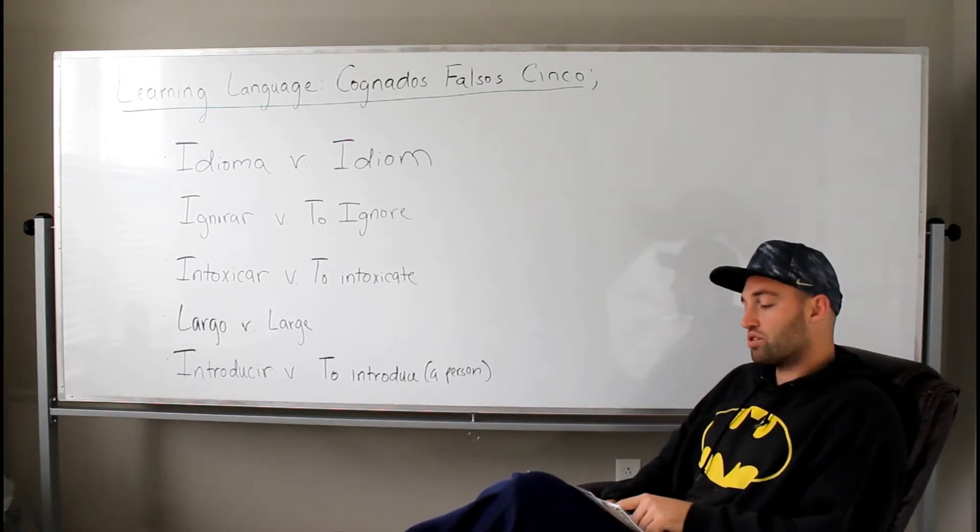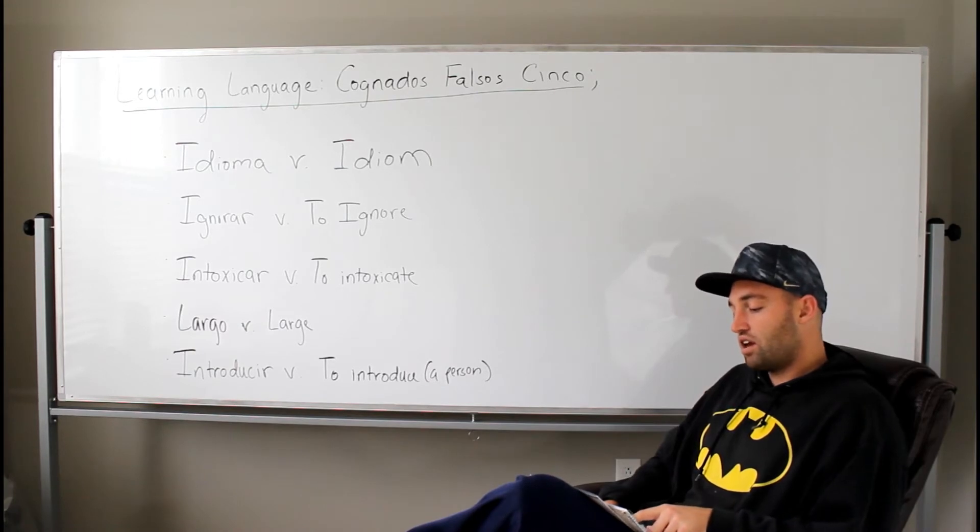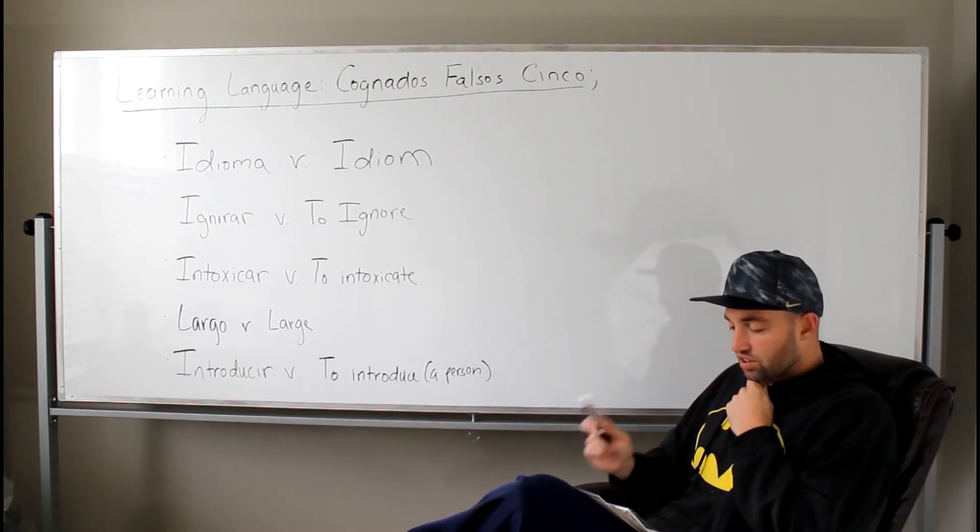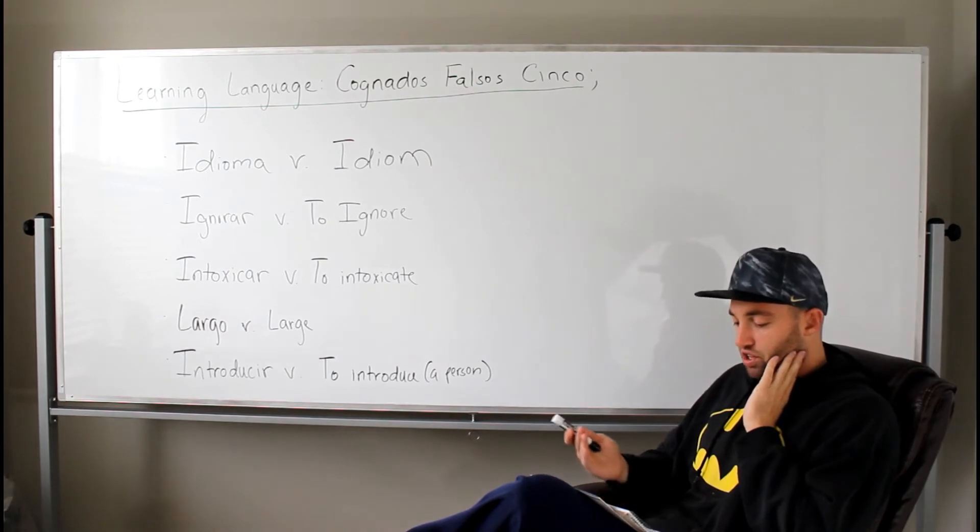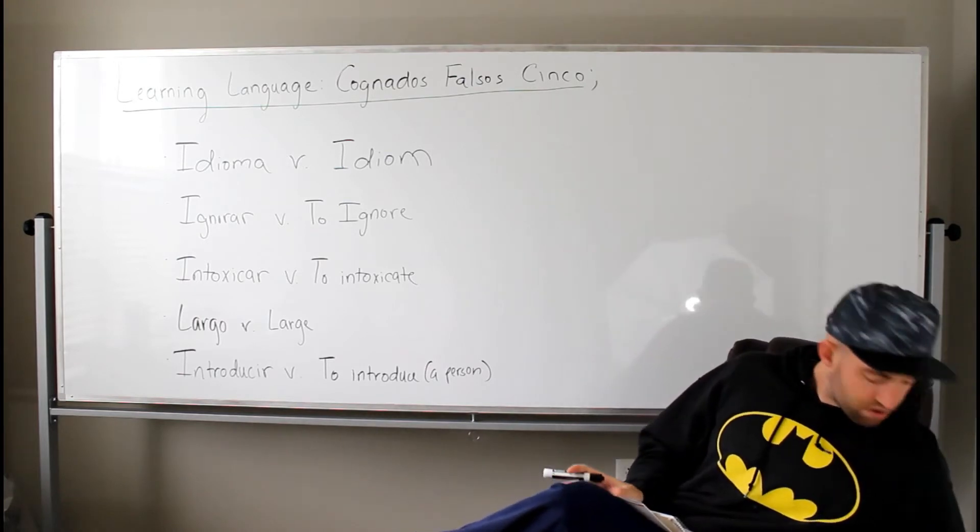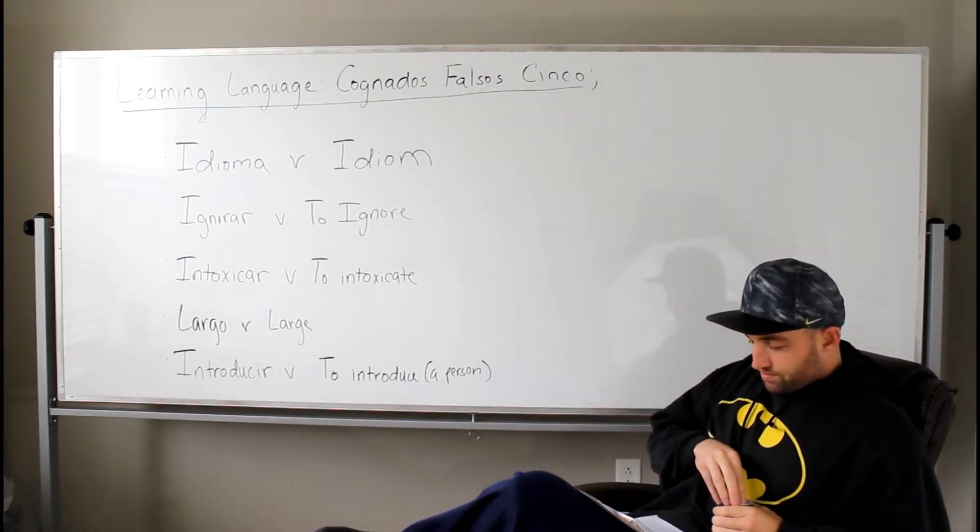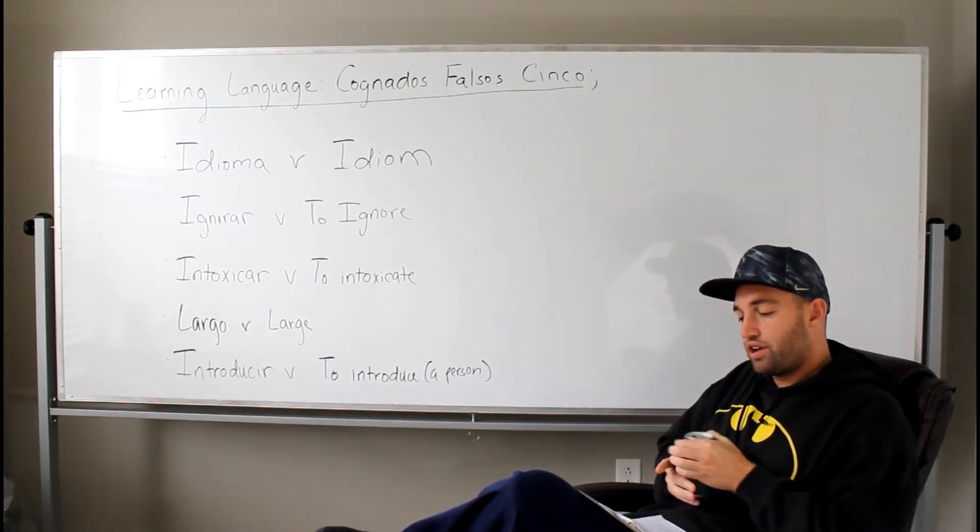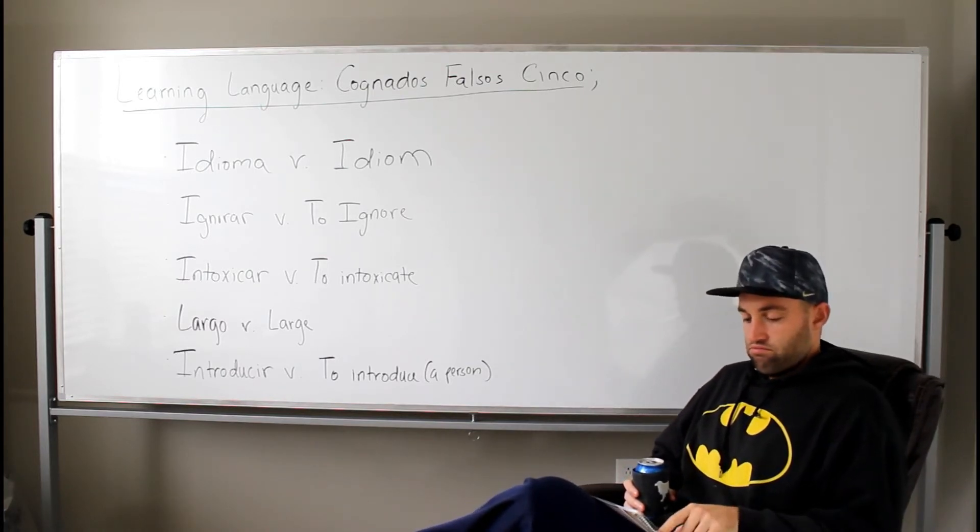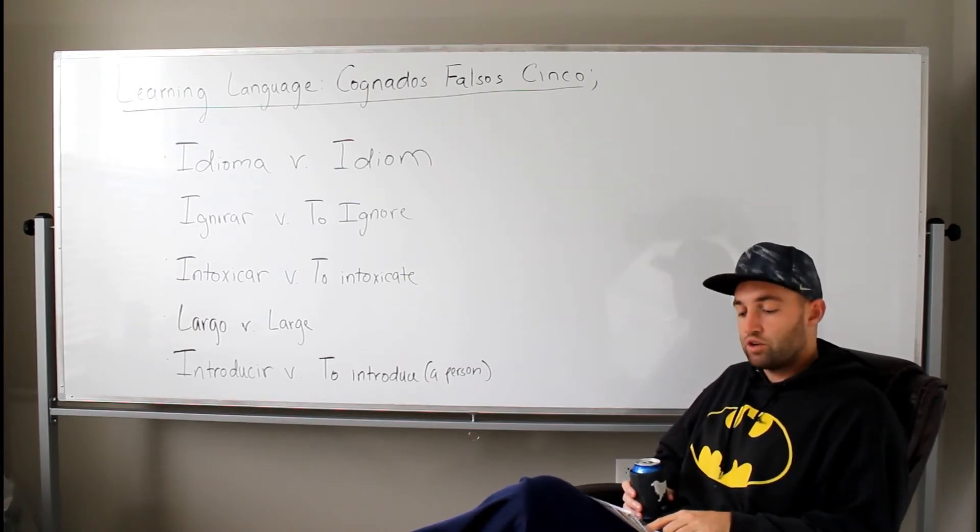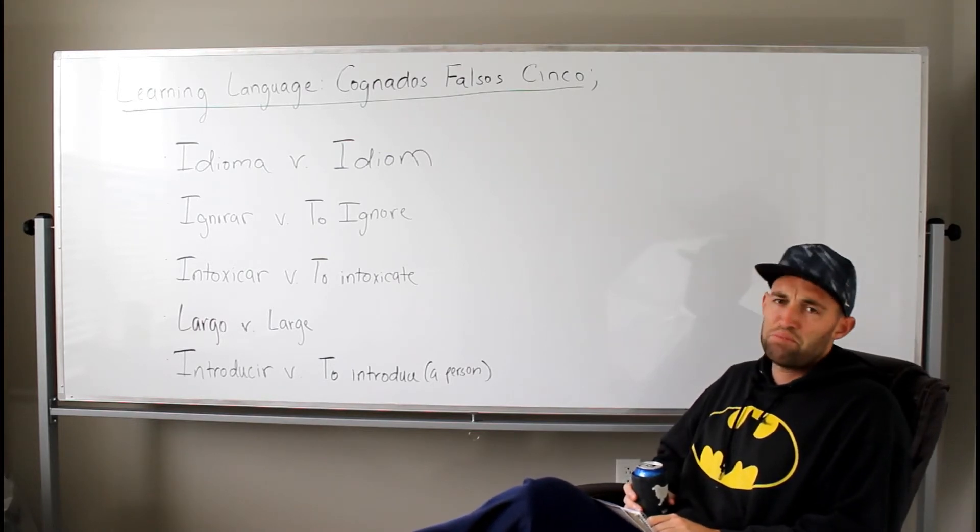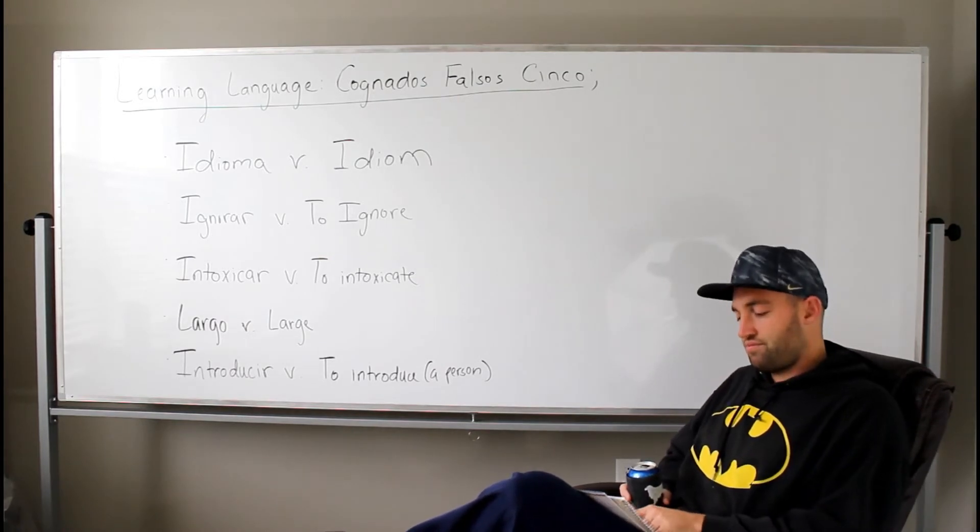But on Google it says, idiom is a group of words established by usage as having meaning not deducible from those of their individual words, such as raining cats and dogs. Other definition, a characteristic mode of an expression in music or art. A mode in music is the same notes in different order, or different ways to play them. An idiom. Sounds like idiot, right? Linguistically, like letters. Idiom, idiot, changed by one letter.